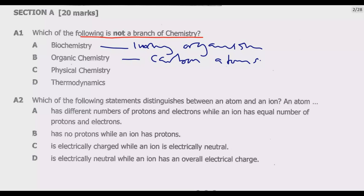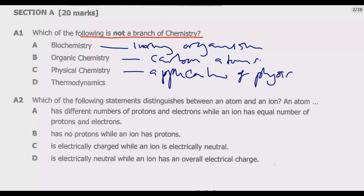Physical chemistry is also a branch of chemistry concerned with the application of the techniques and theories of physics to the study of chemical systems. Thermodynamics, however, is a branch of physics — not chemistry — that deals with heat, work, and temperature and their relation to energy, radiation, and the physical properties of matter. So thermodynamics is physics, not chemistry, making D the correct answer.